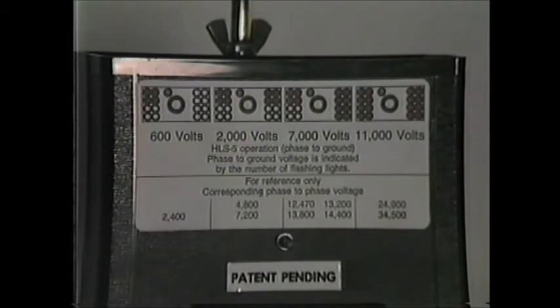Adapters are available to allow the HLS 5 to be used on 15 through 35 kV underground systems. These adapters allow the HLS 5 to be placed directly on the underground bushings. Due to the proximity of grounds on underground equipment, the HLS 5 will usually have one more bank of lights lit than would be expected when used in an overhead system. Because induced voltages are not as prevalent on underground systems, customers have not found this to be an operational problem.